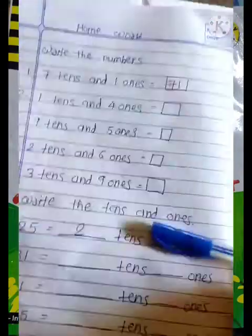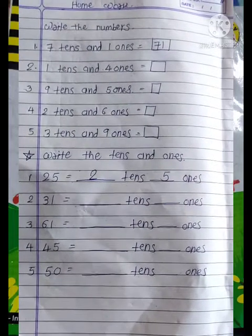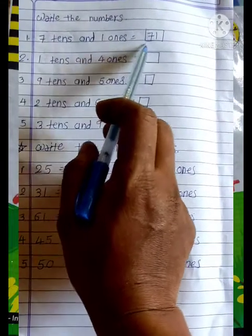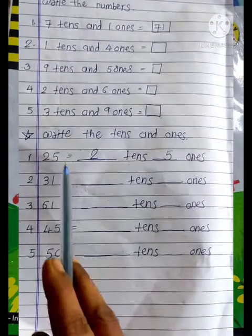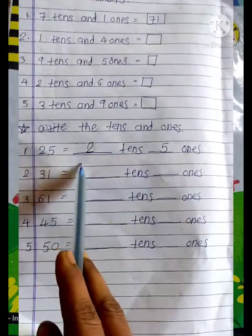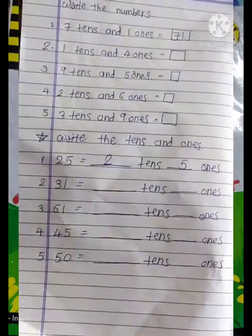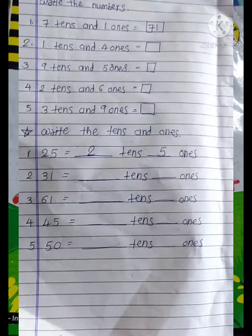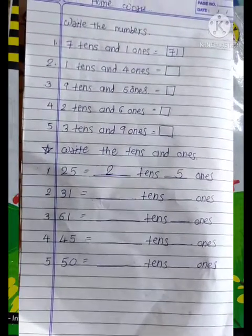Today your homework is write the numbers. For example, 7 tens and 1 one equals 71. Next is write the tens and ones. So 25 equals 2 tens and 5 ones.